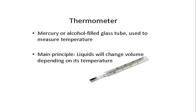A thermometer works mainly on the principle that liquids will expand or change in volume depending on the temperature. That is, it will expand when there is an increase in temperature, and it will contract when there is a decrease in temperature. So, liquids expand on heating and contract on cooling — this is the main working principle of a thermometer.